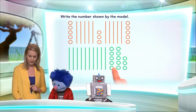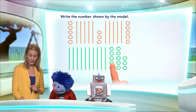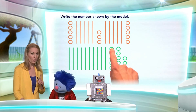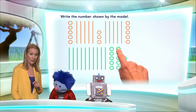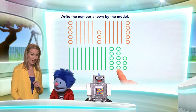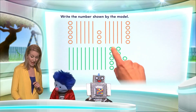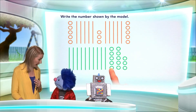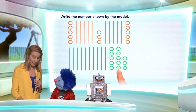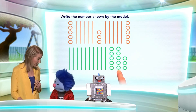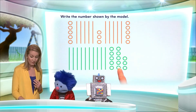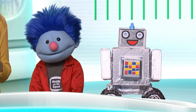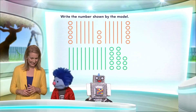Here we go: one, two, three, four, five. Wait a minute — don't we have another one? Yeah, right next to it. So if that column of ones is five, then this column of ones is five. What's five plus five? That is ten.